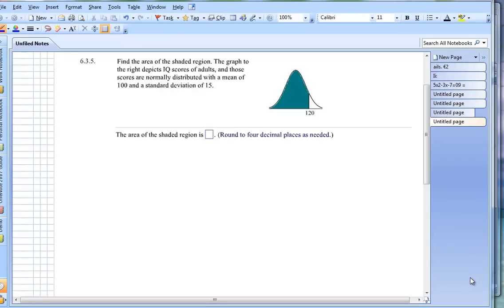This video assumes that you know how to find the probability of an area shaded to the left of a given z-score. But if you look at this 120 right here, this is not a z-score. It's an x.